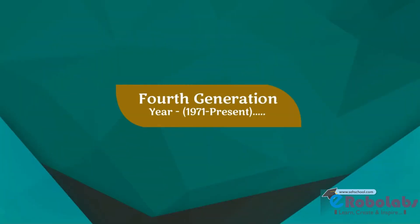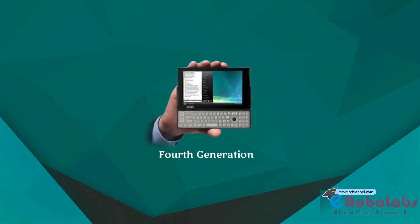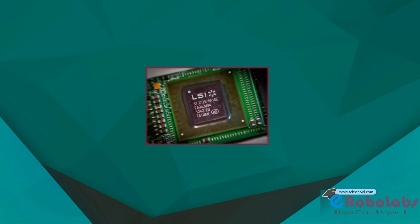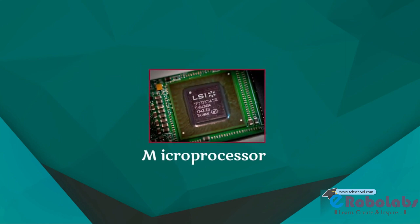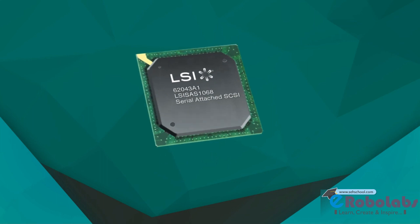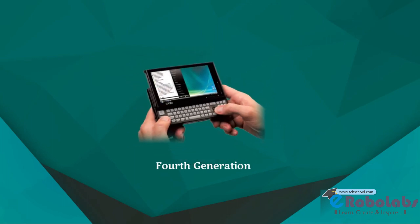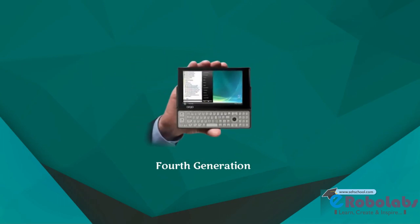Fourth generation, year 1971 till present. This is the generation where we are working today. The computers which we see around us belong to the 4th generation. Microprocessor is the main concept behind this generation of computers. A microprocessor is a single chip LSI circuit which is used in a computer for any arithmetical or logical function to be performed in any program. In the 4th generation computers, the size of computers became very small and they perform fast and efficiently.